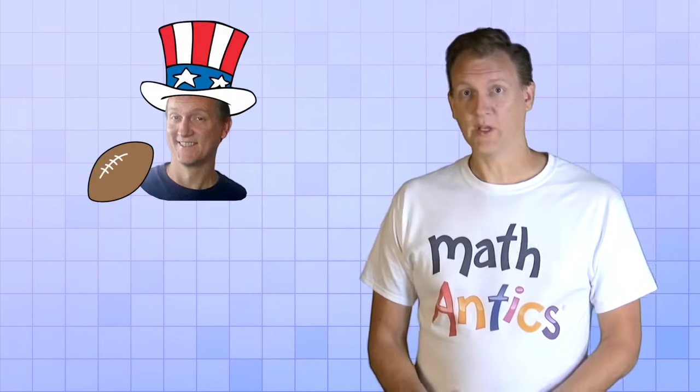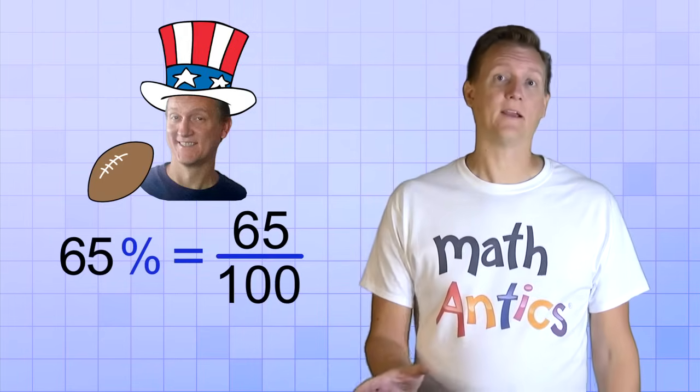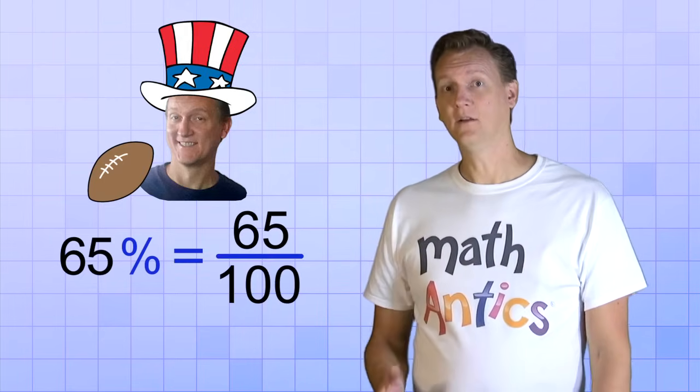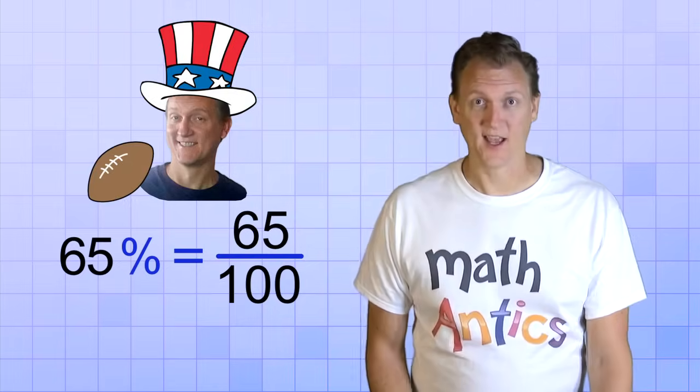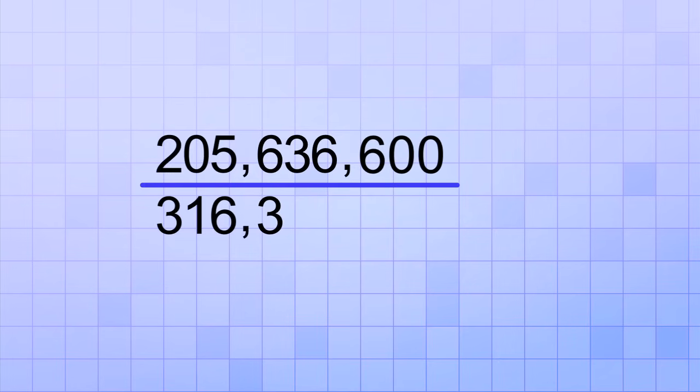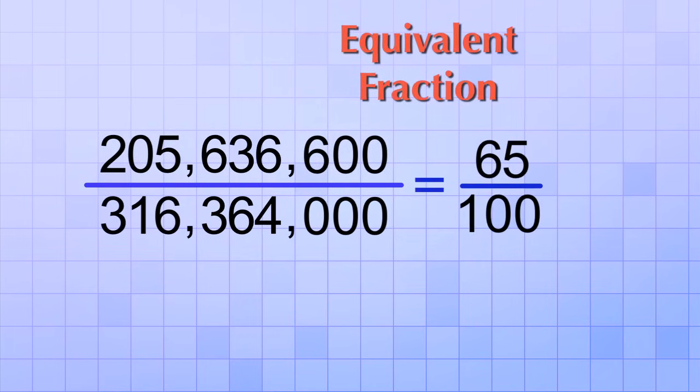Remember our example about Americans and football? We used 65% to describe how many like watching it. Well, the actual numbers might look something like this: 205,636,600 over 316,364,000. That's a lot of people! And that fraction's not very easy to imagine. But the equivalent fraction, 65 over 100, is much easier to imagine. And it tells you that for every 100 Americans, 65 of them like watching football.